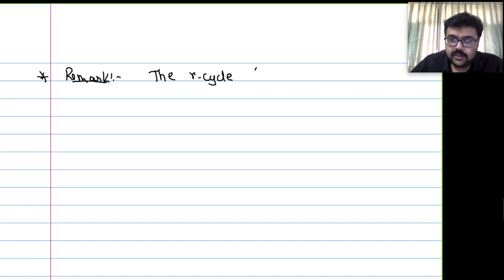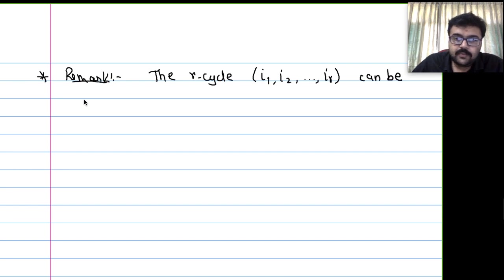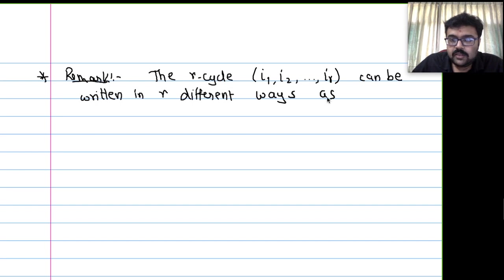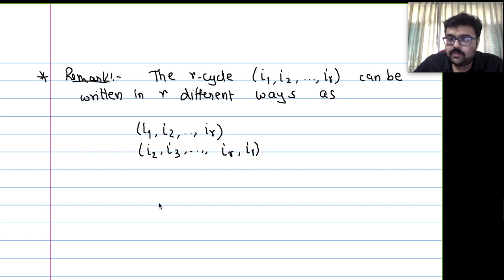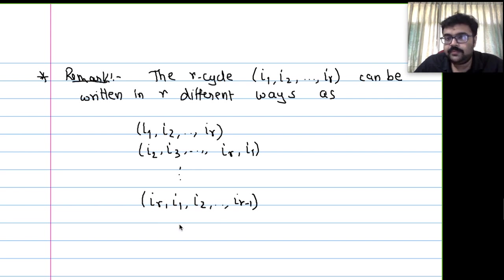The r-cycle (i1, i2, ..., ir) can be written as (i2, i3, ..., ir, i1), or (i3, ..., ir, i1, i2), ..., or starting from ir: (ir, i1, i2, ..., i_{r-1}). These are all r different ways to write the same cycle. We cannot change the cyclic order and cannot reverse it.